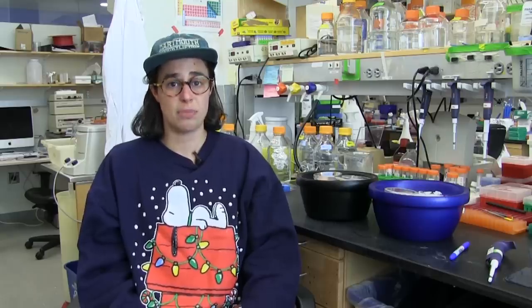Now, there are three main reasons for that. The first being that there are two major types of brain cells. The first are neurons. These cells are the ones we traditionally think of as existing in the brain. They communicate with each other and help us perform all the tasks we normally perform during the day, like talking, learning, listening.